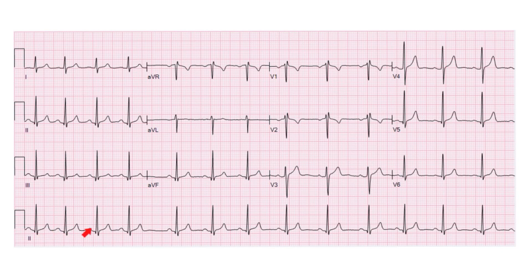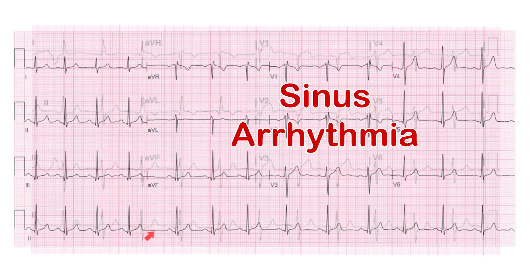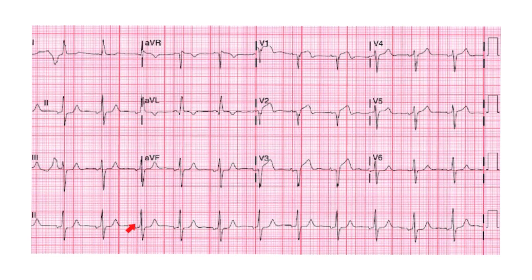On this next EKG, looking at lead 2, there is an upright P wave before each QRS complex, similar in shape and morphology, with a constant PR interval. However, the RR interval is not the same — this is an irregular rhythm. The QRS is clearly narrow, and the rate is roughly 70 bpm. Everything is like sinus rhythm except it is irregular — this is sinus arrhythmia, with no significant clinical significance.